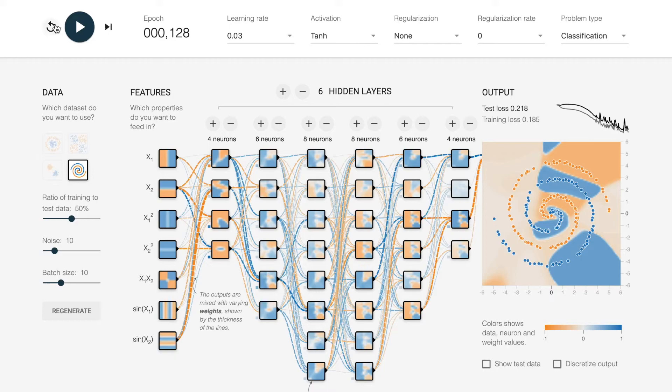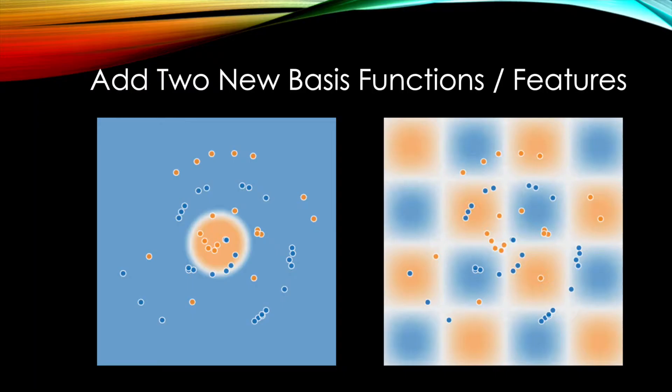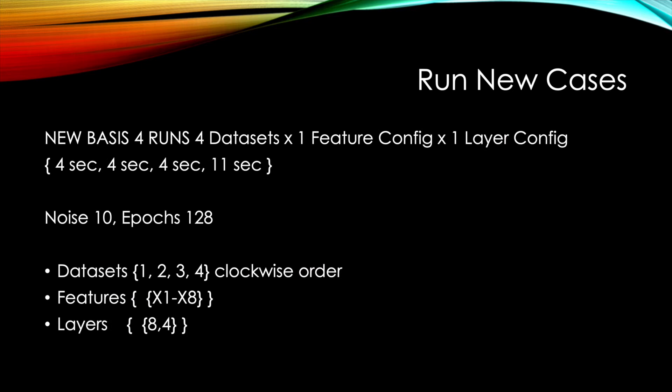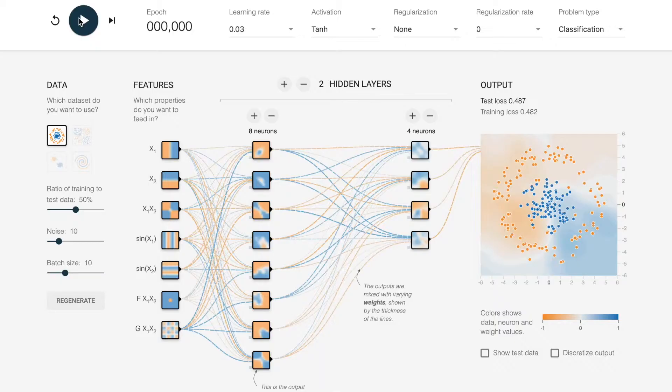So my small contribution in this was to experiment with adding two new basis functions or features into the neural net. And I'll show you at the end the process that I used to do that. But for now, we do a new run, four data sets, same amount of noise, same number of epochs. And we run the data sets in that same clockwise order of each pattern, but we're going to just run it with new basis functions. So we're going to add two new basis functions and see if we can do a little bit better.